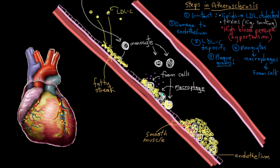The smooth muscle cells can sense that something's not quite right. They really want the plaque covered up, because they don't want the thrombogenic — meaning clot-forming — plaque to be exposed to the blood. So they start to secrete a fibrous cap: a collagen and elastin protein cap that covers up the plaque and shields it from the bloodstream. That's called a fibrous cap.